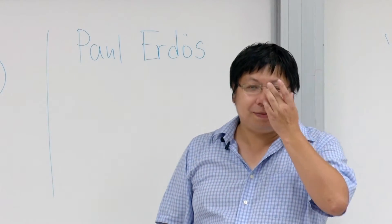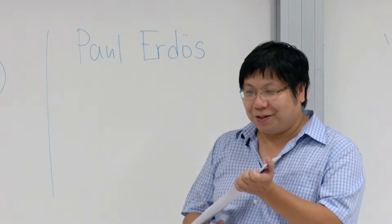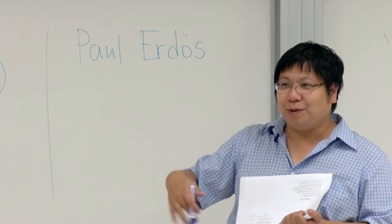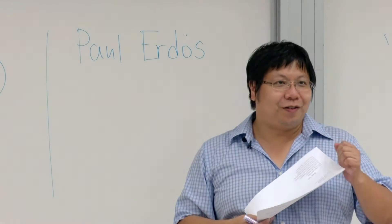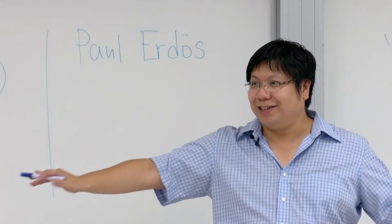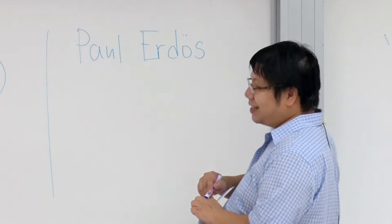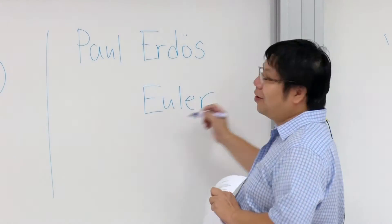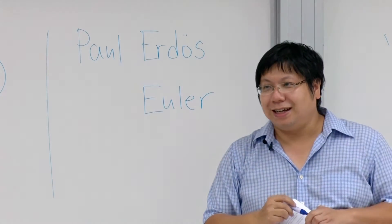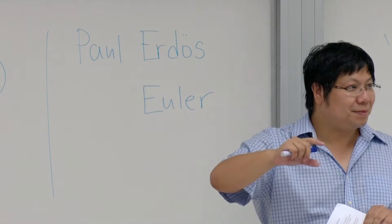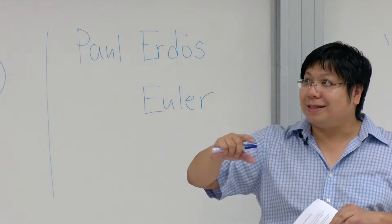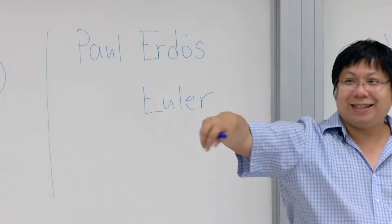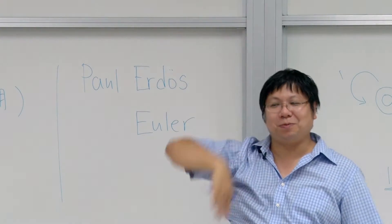So his name is called Paul Erdős. I think a Hungarian mathematician who died already. And according to people known so far, he has the most number of publications ever. There are two persons with most number of publications. One is called Euler. Euler is even earlier.